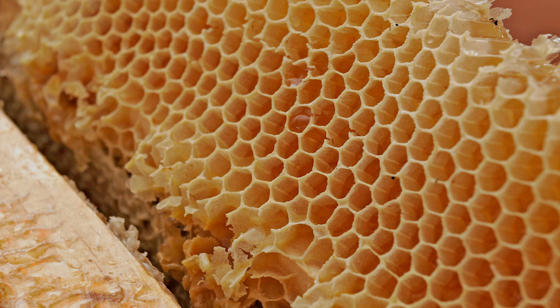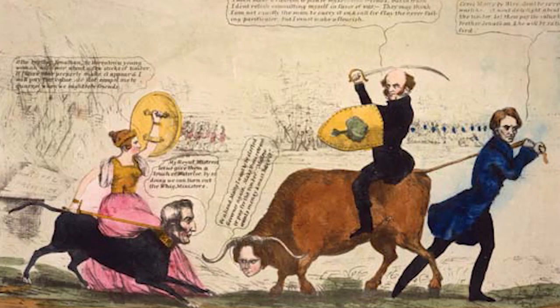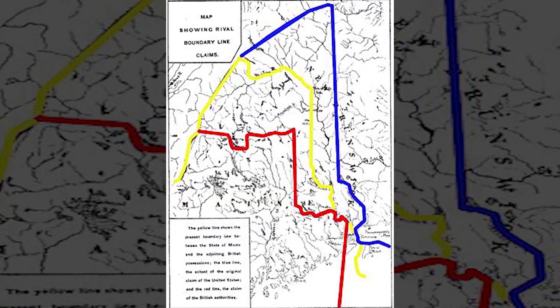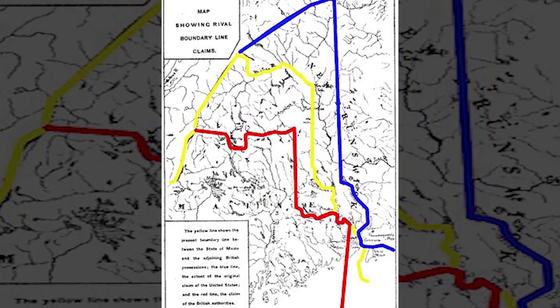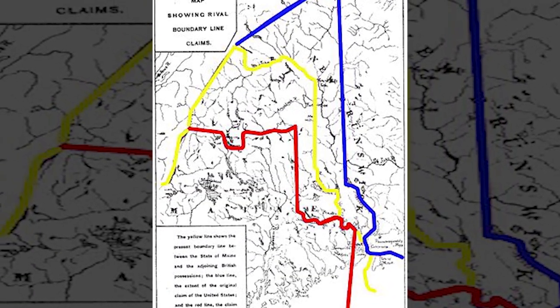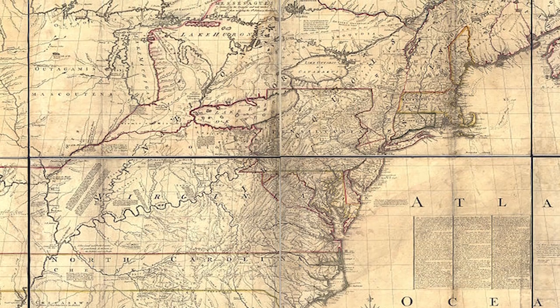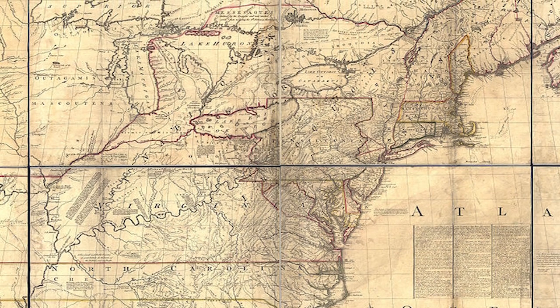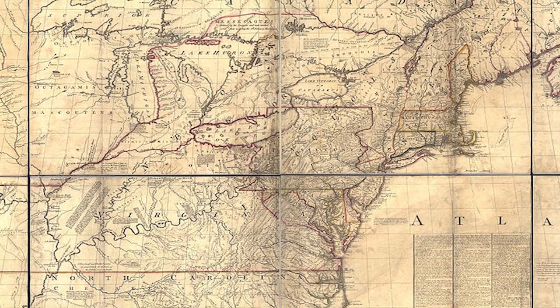The first one we will look at is the Aroostook War, which was between the US and UK in 1838. The conflict arose from a border dispute between the state of Maine and the Canadian province of New Brunswick. The issue stemmed from the Treaty of Paris in 1783.